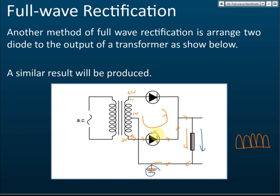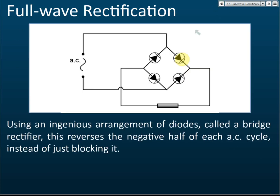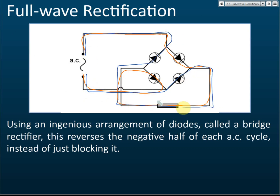Both designs achieve full wave rectification. You must know the direction of current flow throughout the whole circuit — especially which section carries direct current. From the relevant two points across the resistor, the current is always direct current, but in the other parts of the circuit the current is still alternating, moving backward and forward.